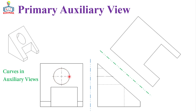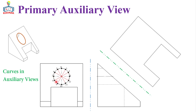We'll divide this circle on one view and then transfer it into the auxiliary view. This is the circular feature on the front view, and this one will be on the left side view — the circular feature on the left side view is represented with a hidden line. Now let's divide this circle into a number of sectors. If the number of sectors increases, the accuracy of the represented view increases. If you divide into fewer sectors, the representation on the auxiliary part will not be as exact.